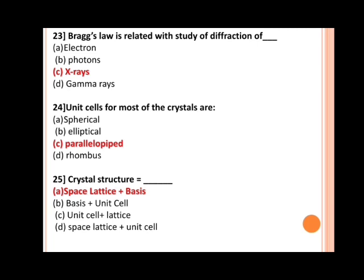Next, Bragg's law is related with the study of diffraction of dash. Options are: a) electron, b) photon, c) X-rays, d) gamma rays. Our correct answer is c, X-rays. Next, unit cells for most of the crystals are. Options are: a) spherical, b) elliptical, c) parallelepiped, d) rhombus. The correct answer is c, parallelepiped.